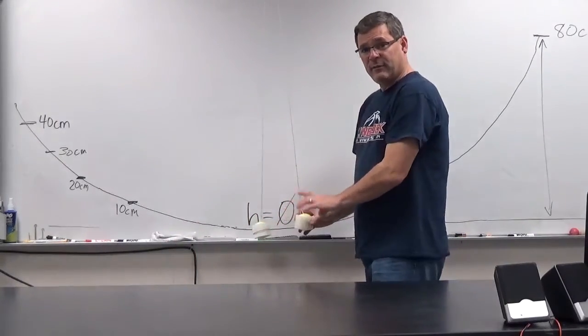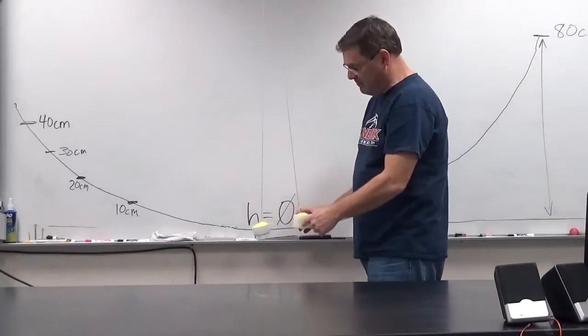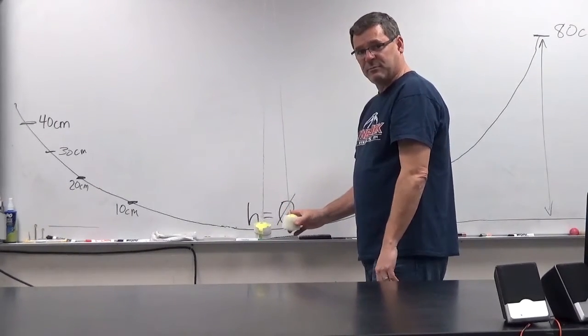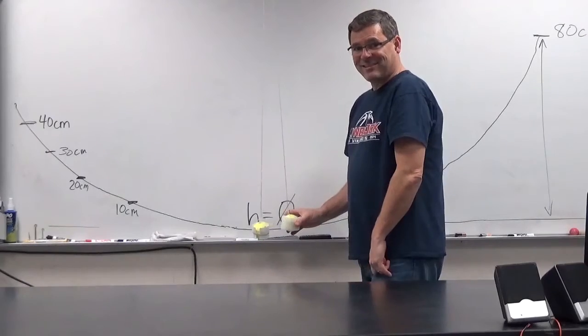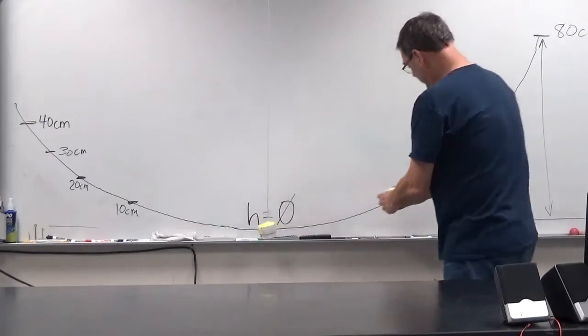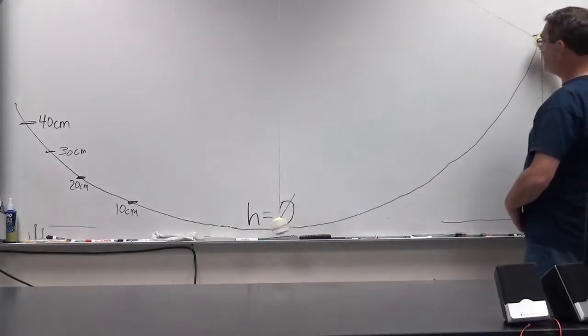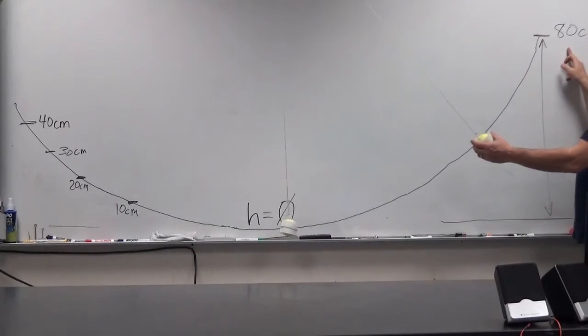Let's assume that Robin Hood and Fiona have about the same mass, so each ball represents each person, each of mass M. I'm going to release Robin Hood from a height of 80 centimeters.